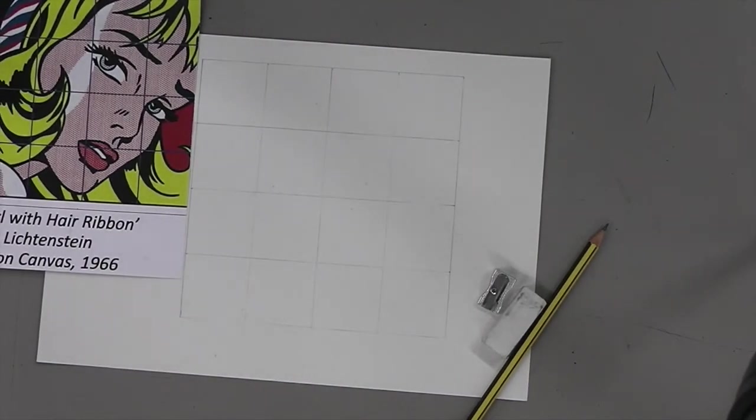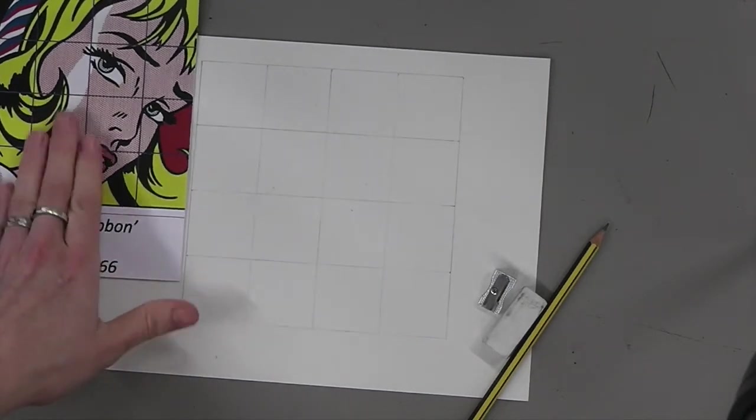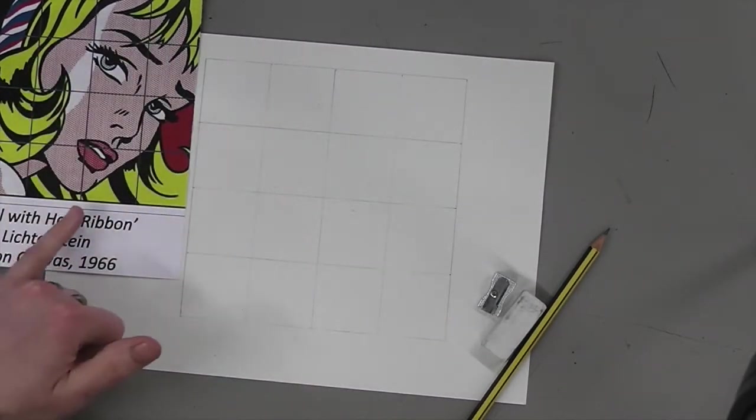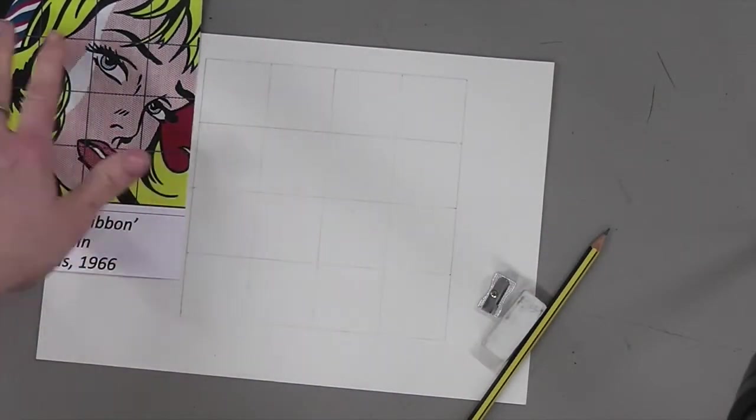Hi Year 8, okay the next video that we're going to be doing is looking at how to transcribe the drawing, sorry the painting, across to your drawing. You'll see that you've got grid lines on both.